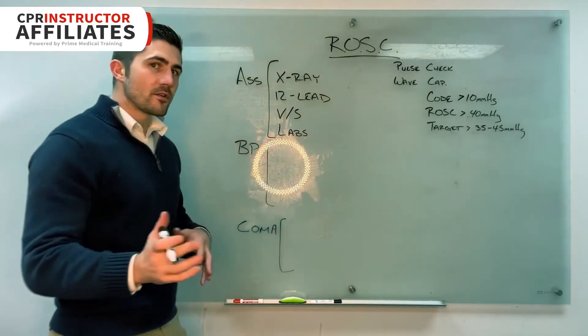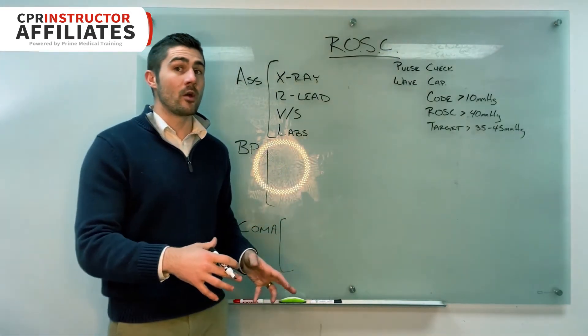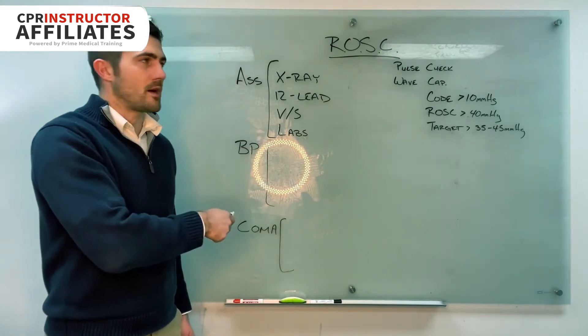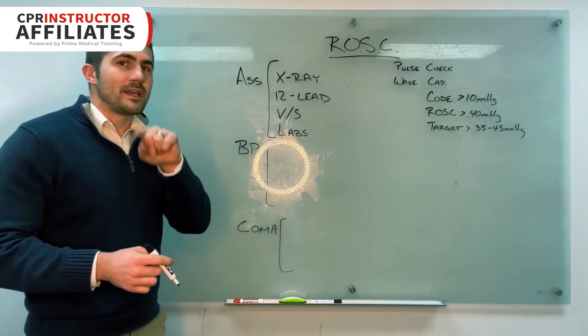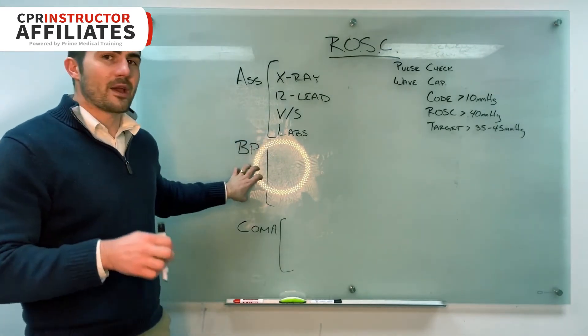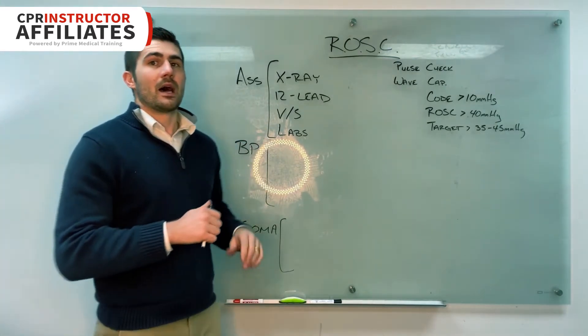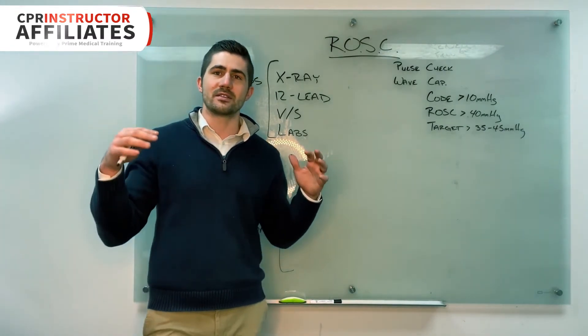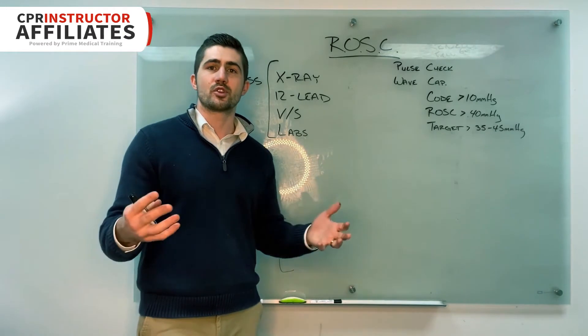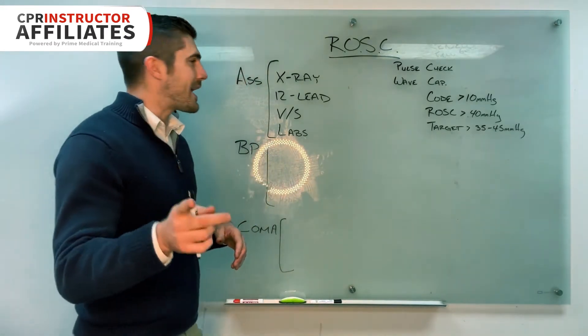I tell them, all right, when you get to the ROSC algorithm in your mega code, just make sure to rattle these things off. And when you ask for vital signs, it's going to lead you into our next bracket, which is blood pressure. So I'll ask them to say, what does the systolic number need to be less than in order for us to treat it? And the answer is 90.